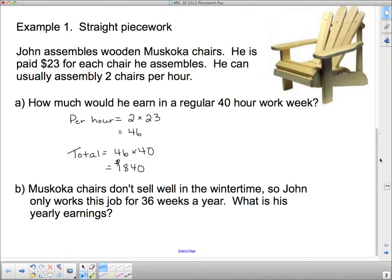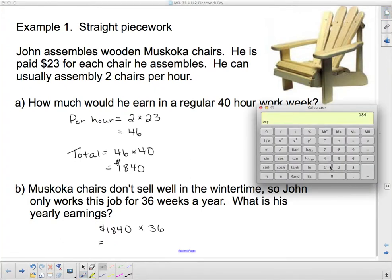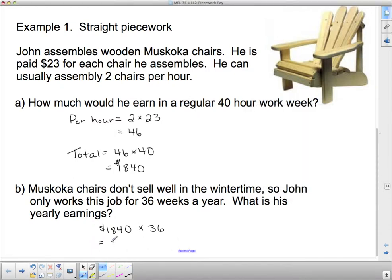Muskoka chairs don't sell well in the wintertime, so John only works this job for 36 weeks a year. What is his yearly earnings? He makes $1,840 every week and he works 36 weeks. So $1,840 times 36 equals $66,240, which is pretty good for only working 36 weeks of the year.